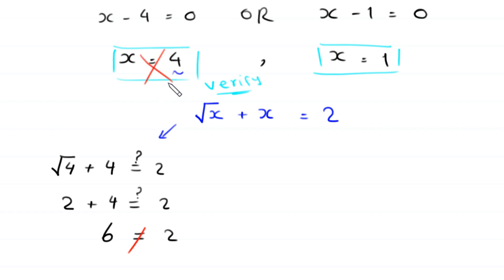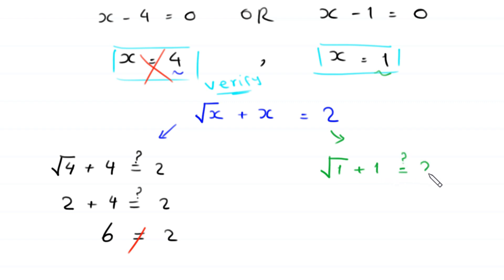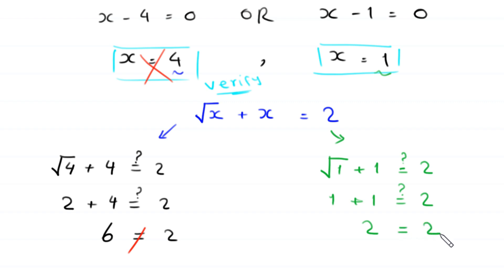When x equals 1, the equation becomes square root of 1 plus 1 equals 2. The square root of 1 is 1, and 1 plus 1 equals 2, which equals 2. So x equals 1 is a valid solution.